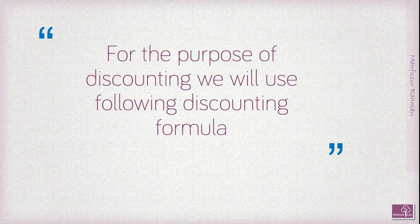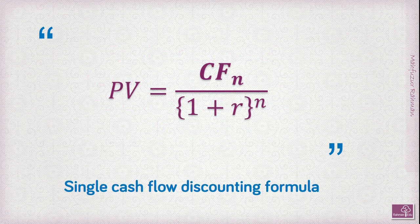For the purpose of discounting we will use the following discounting formulas. Our first formula is the single cash flow discounting formula, where present value equals CFn divided by (1 plus r) to the power n. Here CFn is the cash flow that is going to be delivered in the nth period, and r is the discount rate.